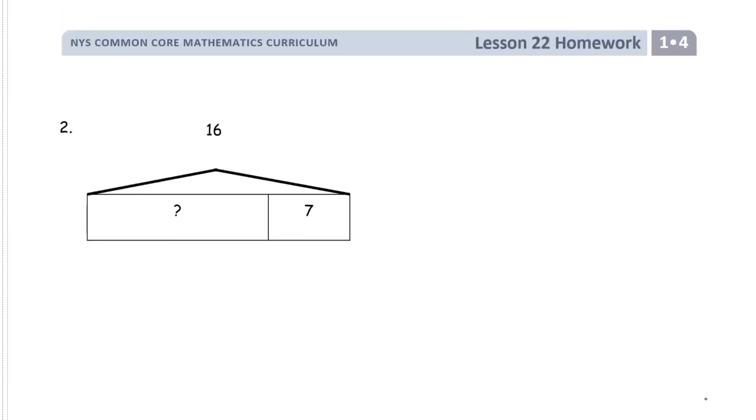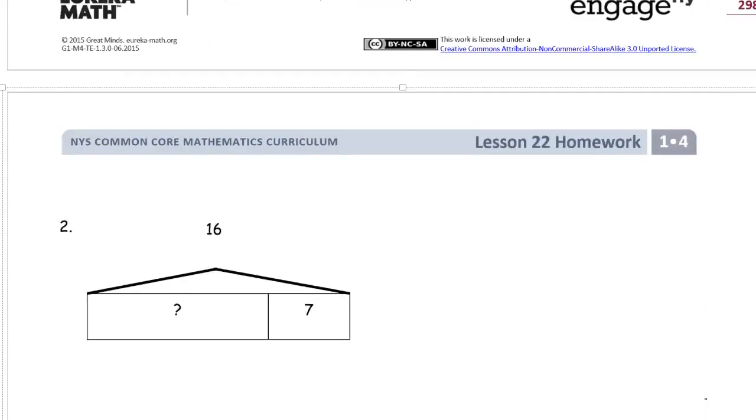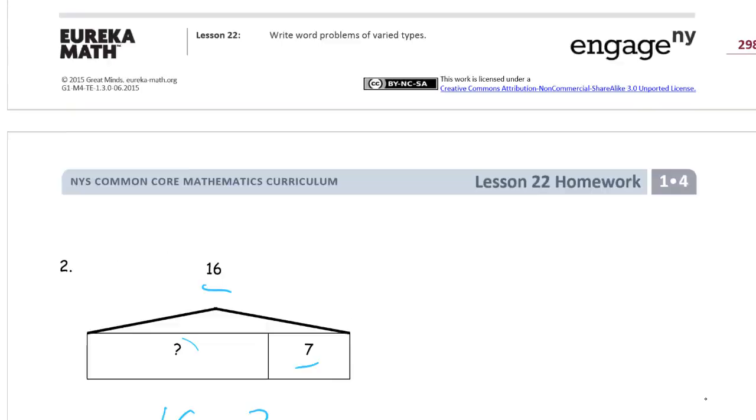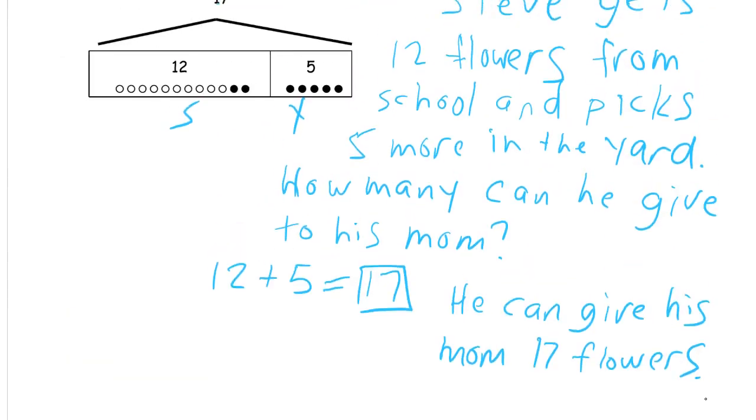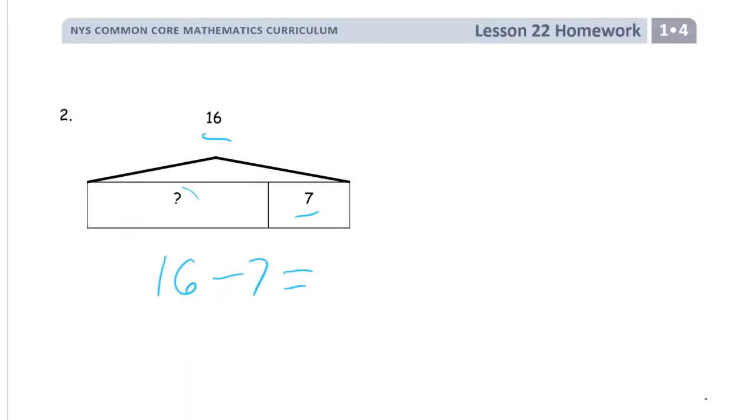Now for our next example, I mean, we can still use the same word bank. Don't have to use any of those, really. But now we've got a, this looks like a take-apart story, where now we have to figure out, we know the whole, and we know one of the parts, but we have to figure out the other part. So we should draw the pieces in it too, right? Because here they drew the pieces, but the pieces aren't here. So seven, we can just draw the rest of them.